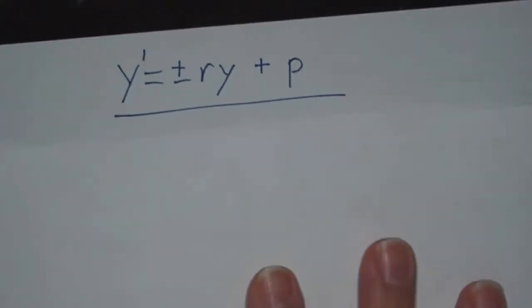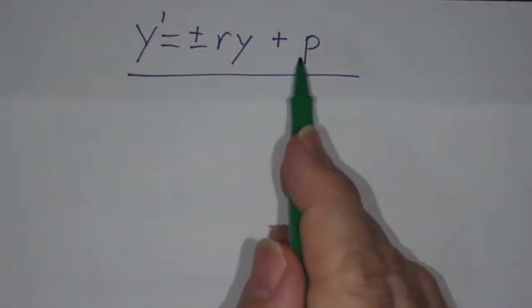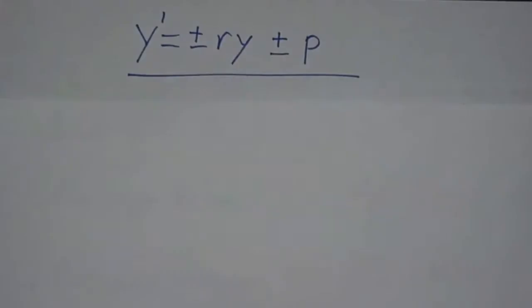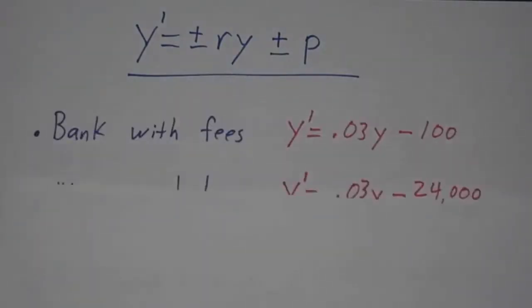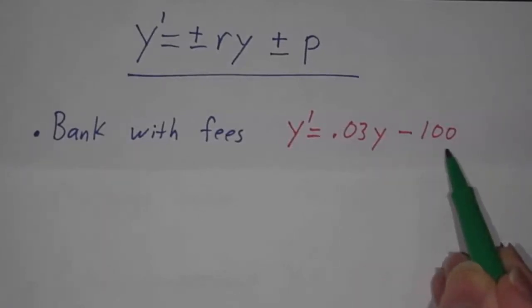Finally, here are some problems where y' is either ry plus a constant or -ry plus a constant, and this constant can be negative as well. Suppose you had a bank that charged fees. They give you 3% interest, but they also charge you $100 a year. So the amount of money that the bank gives you every year is 3% of your balance minus the $100 in fees.